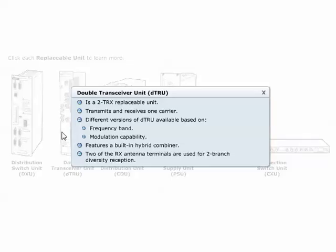The double transceiver unit, DTRU, is a two-TRX replaceable unit. A TRX is a transmitter, receiver, and signal processing unit which transmits and receives one carrier. There are different versions of DTRU depending on the frequency band and modulation capability. The DTRU has two TX antenna terminals and four RX antenna terminals. The DTRU features a built-in hybrid combiner. Two of the RX antenna terminals are used for two-branch diversity reception. The DTRU is hardware prepared for four-branch diversity reception through the remaining two antenna terminals.